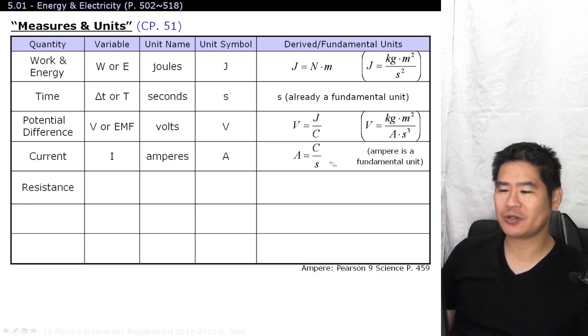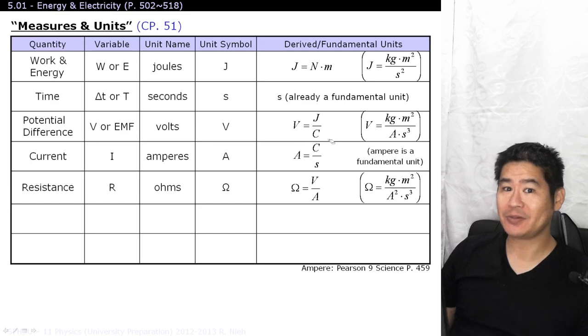Resistance is the opposition to current flow. You might have learned that. The variable for that is the letter R. The unit symbol for that is the horseshoe, omega. An ohm is also equal to a volt divided by an amp. So if you take these two and you divide them by each other, you end up getting that as the fundamental units.